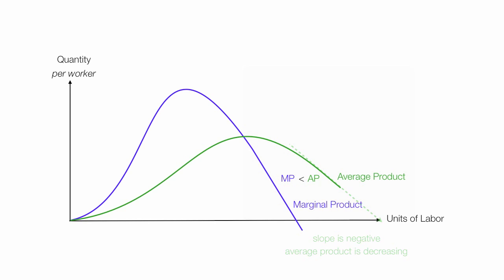So I have three distinct areas: marginal product less than average product, marginal product equal to average product, and marginal product greater than average product.